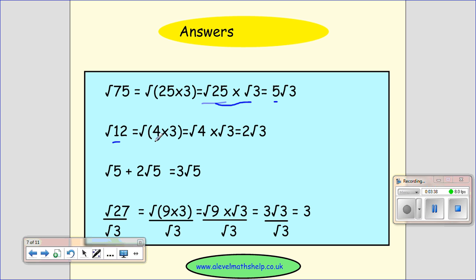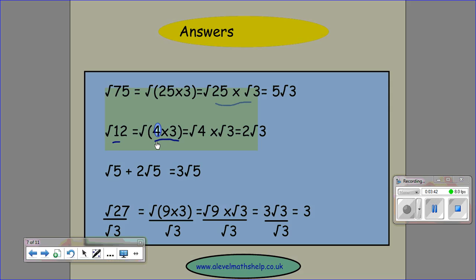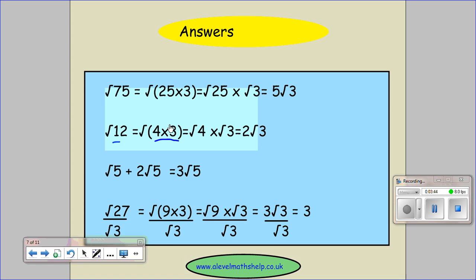Root 12 can be split into 4 times 3, and we've chosen 4 because we could have done 6 and 2, but 6 and 2 isn't very nice because neither of them would get nicer when you took the square root. So taking the square root of 4 gives you 2 and leaves you with the square root of 3, root 3. So it gives you 2 root 3 is the answer.